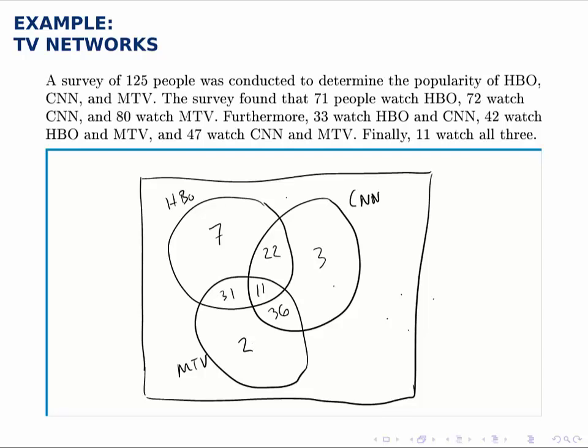Now we're almost done, but all we need to know now is how many are outside all three of these circles, but still inside the universal set. And to do that, we notice that 125 people were surveyed. So we have to add up all of these numbers and then take 125 minus all of that sum. What you should find when you do that, is that there are 13 people who were not accounted for inside the three circles.